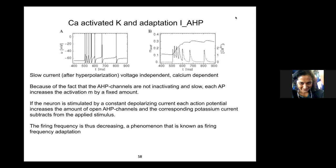Where we were yesterday: we went over in some detail how an action potential is generated, specifically the Hodgkin and Huxley model. We spent a lot of time thinking about potassium and sodium ion channels, and we said these two channels were quintessential in generating any form of action potential. We needed a fast sodium channel to depolarize the membrane, and a slow potassium channel to repolarize it.